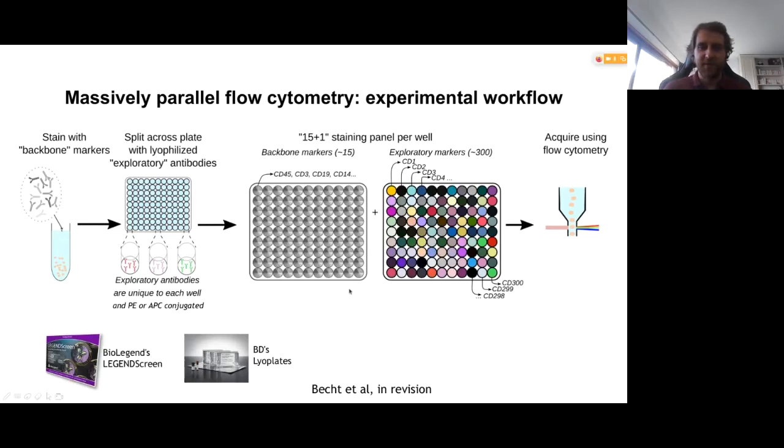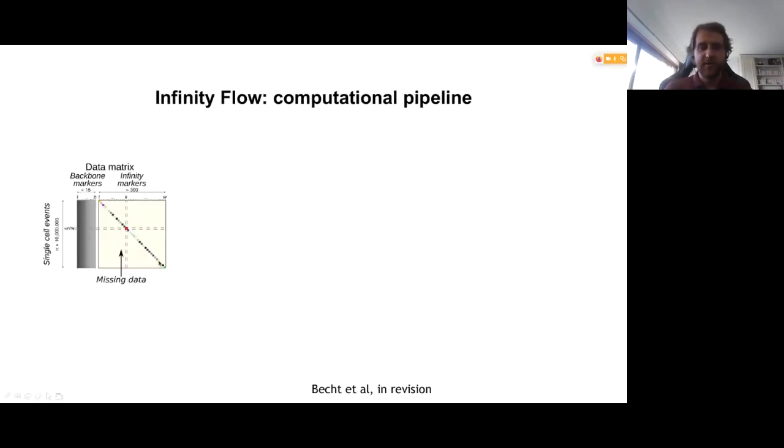So then you just acquire this data using conventional flow cytometers. The experimental workflow is relatively straightforward. But although these assays have been commercialized for a few years, they haven't really taken off. And one of the reasons is there is currently no very good software to help you analyze it. The data analysis is a bit frustrating because it's straightforward to look at the backbone, the antibodies that are common across the whole assay. But you also want to use these exploratory antibodies to help you define cell populations. But you can't really do that because if you have 300 markers, only one cell in 300 is going to be labeled by a particular exploratory antibody. So this exploratory data is very, very sparse.